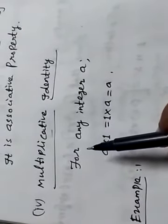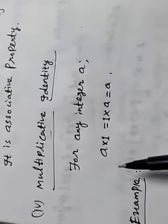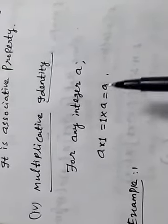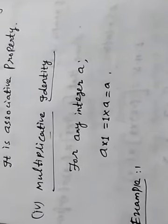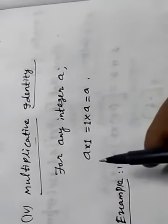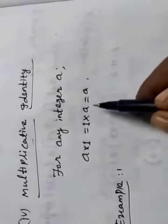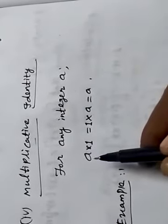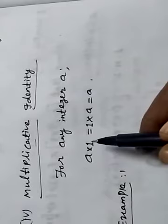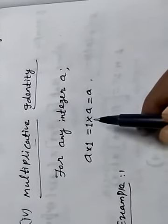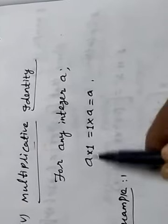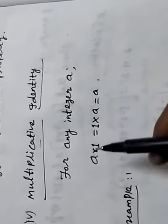Let us see the definition. For any integer A: A into 1 equal to 1 into A equal to A. So we take any one integer and multiply by 1, and also in reverse order 1 into A, and we get the same integer.